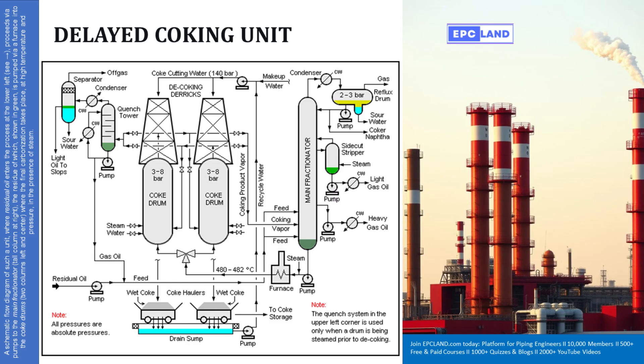I also spot things like off gas going somewhere and light oil to slops. Yeah, those are side streams. The off gas usually goes to a gas plant or separator, you know, to recover any useful light ends and maybe treat it for things like sulfur. Light oil to slops is basically a lower quality stream, might get reprocessed somewhere else.